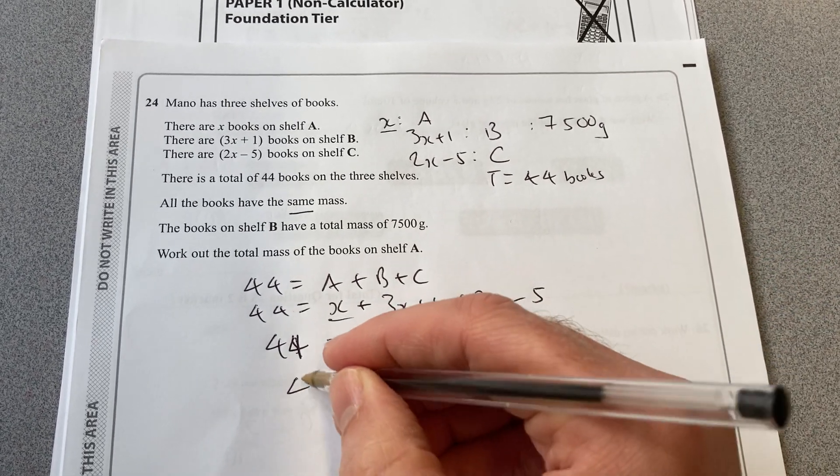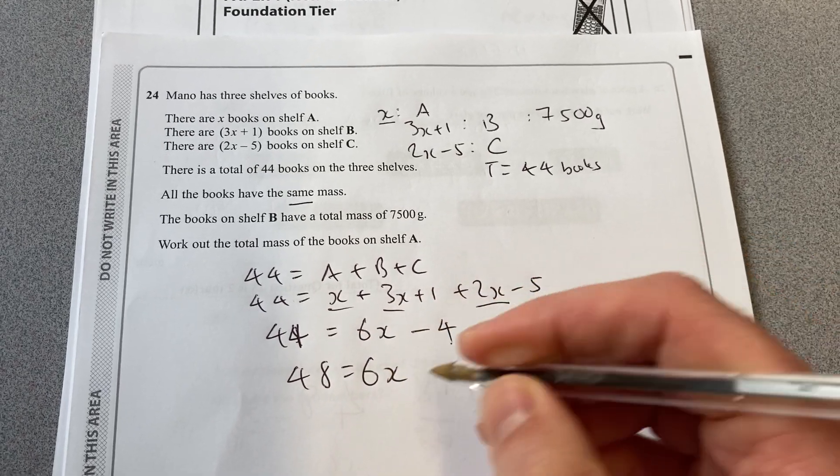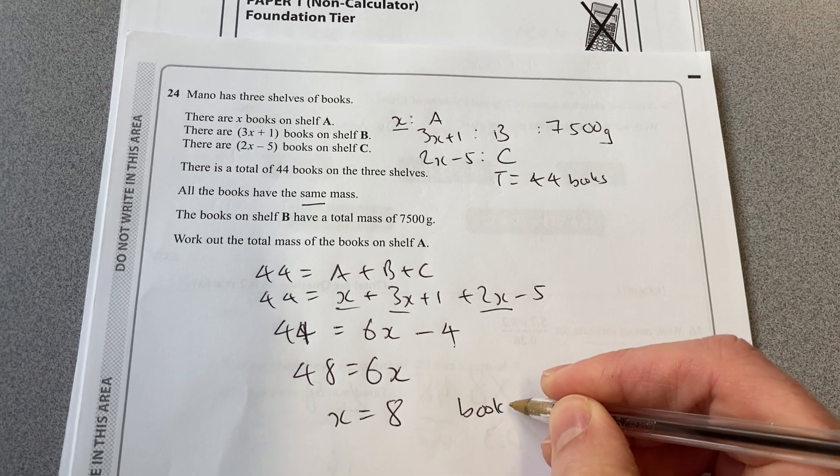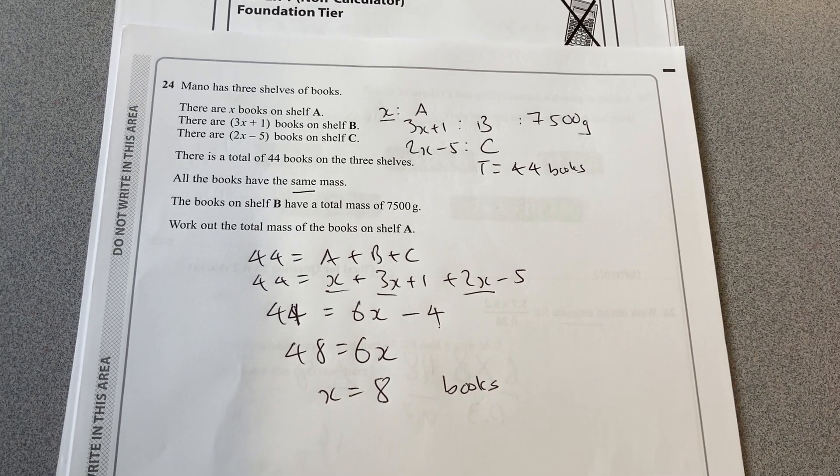Add that 4 to that side. 48 equals 6X, so X will equal 8. And that is what X is in number of books.